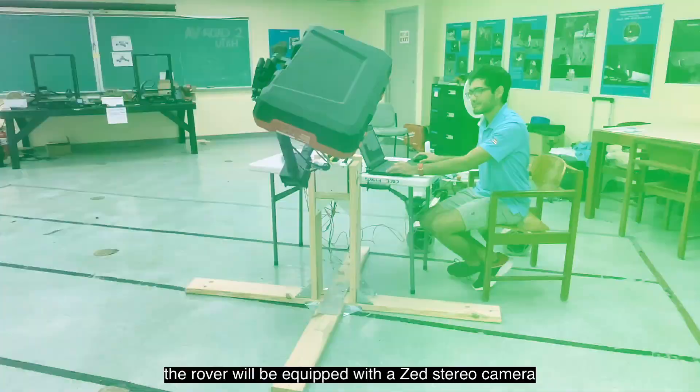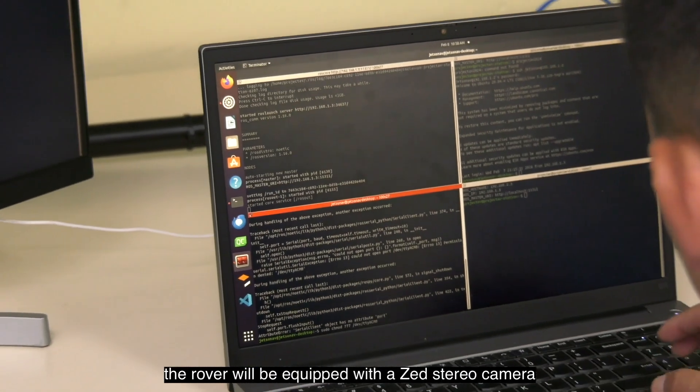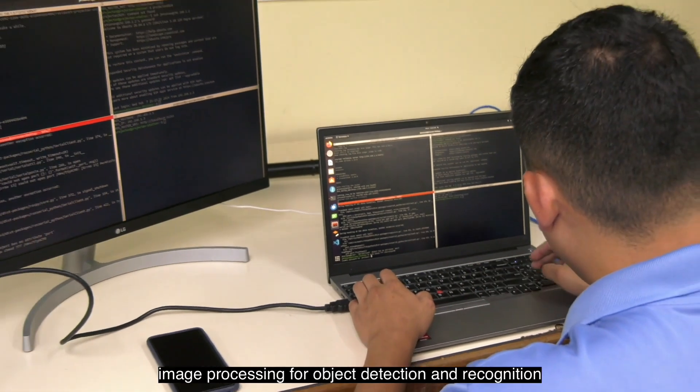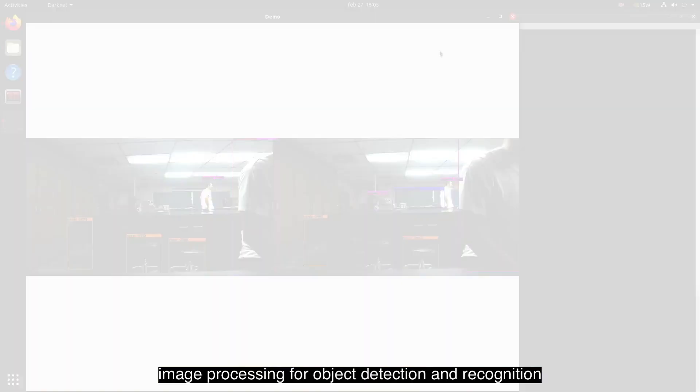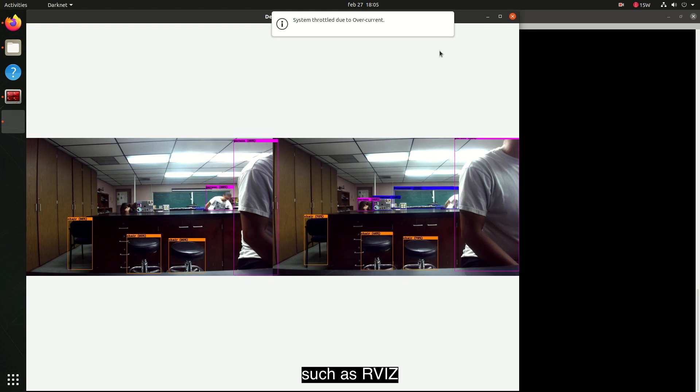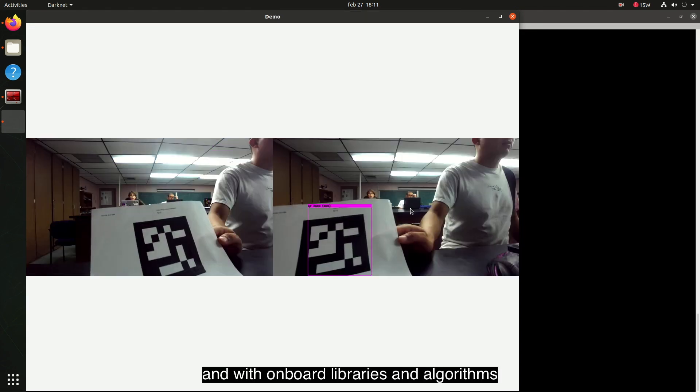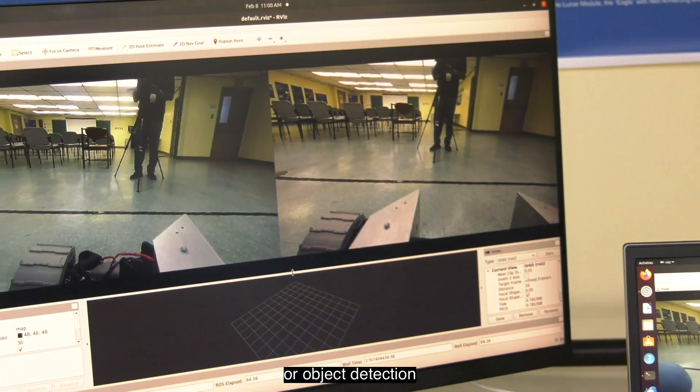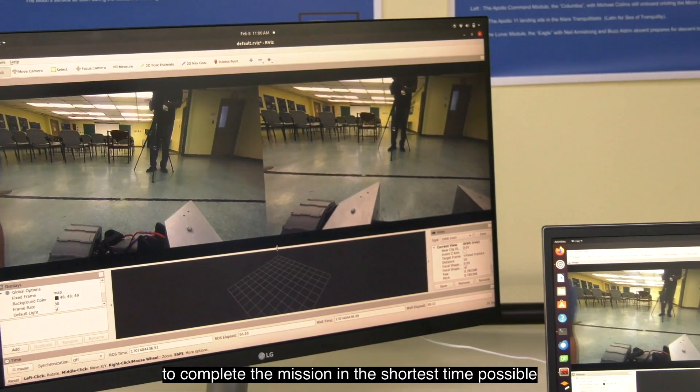For the autonomous mission, the rover will be equipped with a Zed stereo camera which can stream images in real time and implements image processing for object detection and recognition. To navigate the rover, we will use simulation software such as RViz for data visualization, and with onboard libraries and algorithms, the rover will perform autonomous tasks such as finding the optimal path or object detection to complete the mission in the shortest time possible.